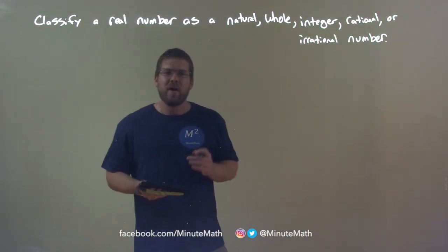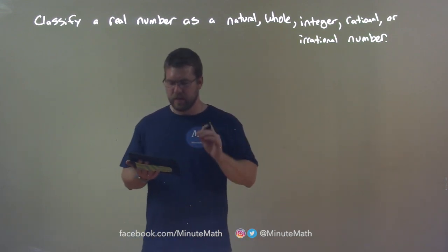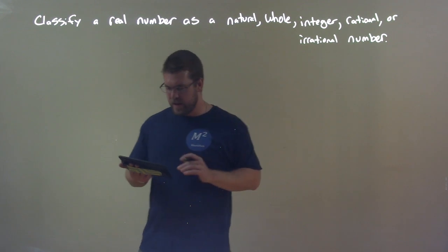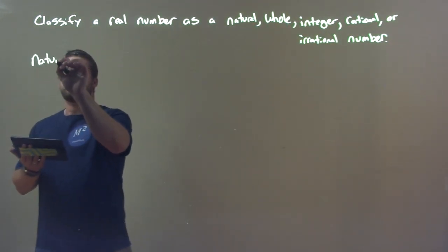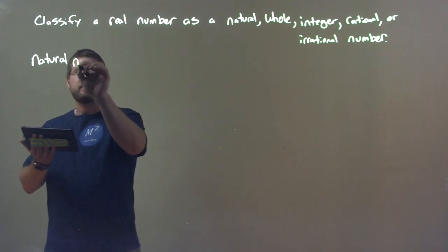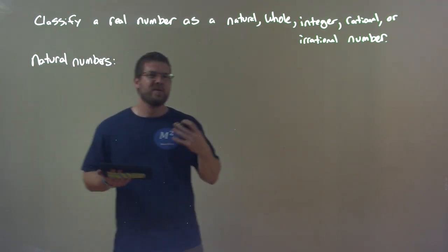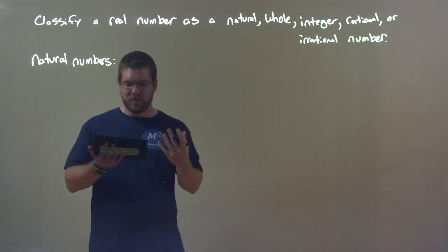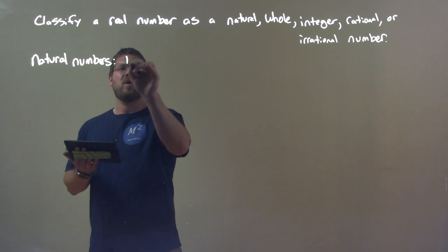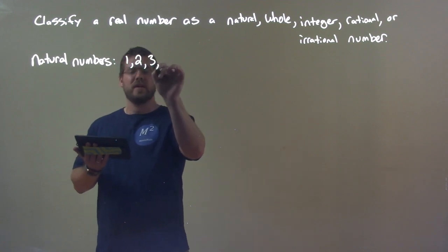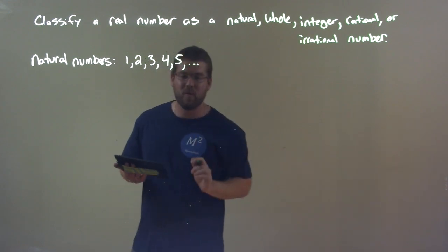So there are a few types of real numbers, or different ways we can classify them. The natural numbers — we almost call them the counting numbers in a sense. They start with one, then two, three, four, five, and so on.